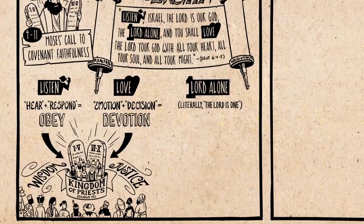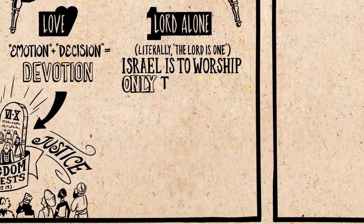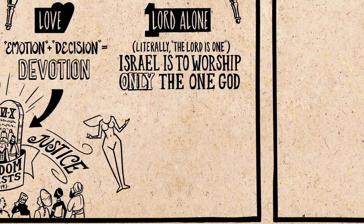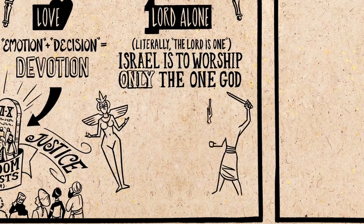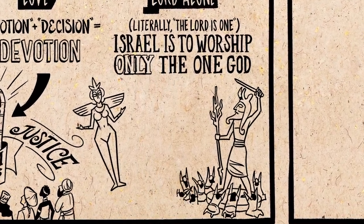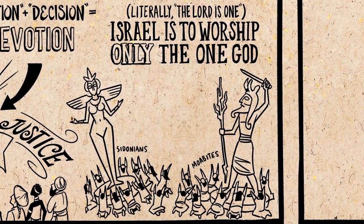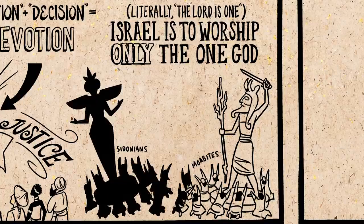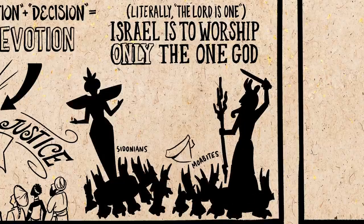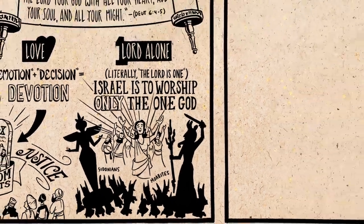Now in context, the point is that the Lord is the one God Israel is to worship and obey. Israel is about to go into the land of Canaan where people worship idol gods that represent all different aspects of creation — the sun, the weather, sex and war. In Moses' view, worshipping these gods degrades humans and destroys communities. But worshipping the God of Israel, who is the creator and the redeemer, will lead to life and blessing.